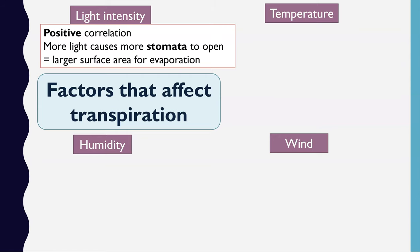Light intensity has a positive correlation: the higher the light intensity, the faster the rate of transpiration. The explanation is that higher light intensity causes more stomata to open. If you have more stomata open, you have a larger surface area through which water vapour can evaporate out.